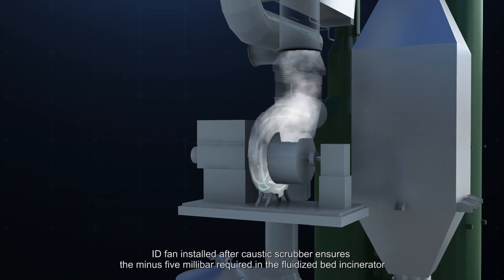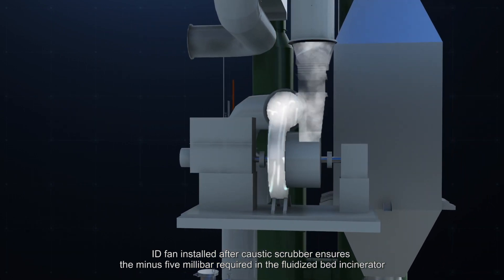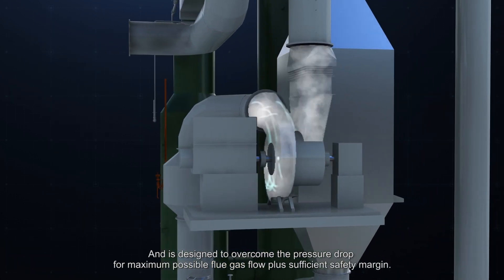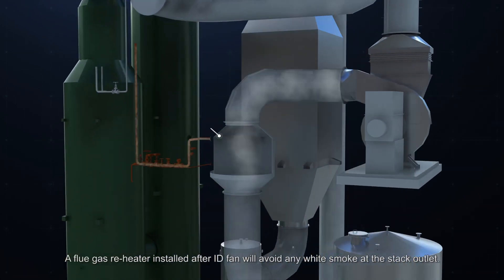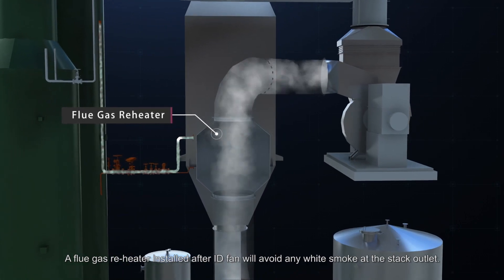ID fan installed after caustic scrubber ensures the minus 5 mb required in the fluidized bed incinerator and is designed to overcome the pressure drop for maximum possible flue gas flow plus sufficient safety margin. A flue gas reheater installed after ID fan will avoid any white smoke at the stack outlet.